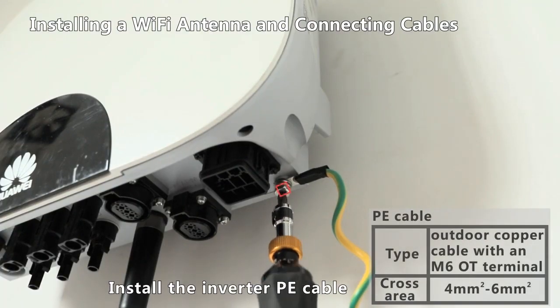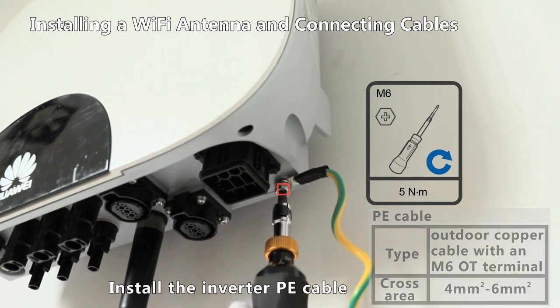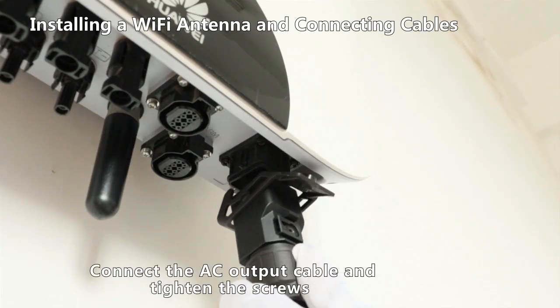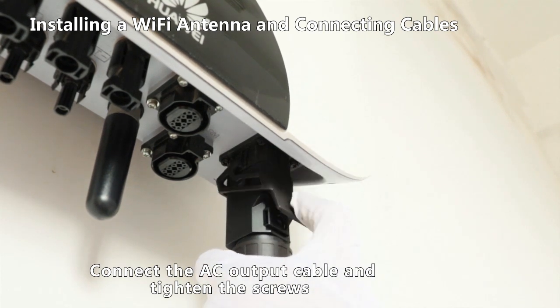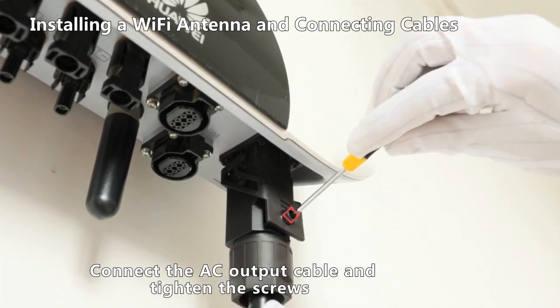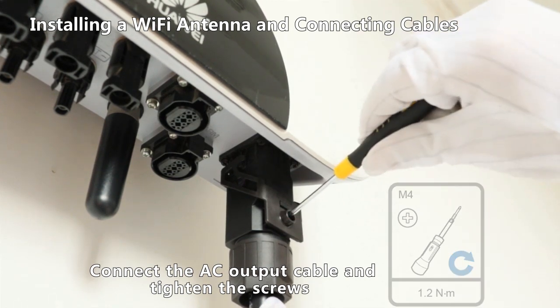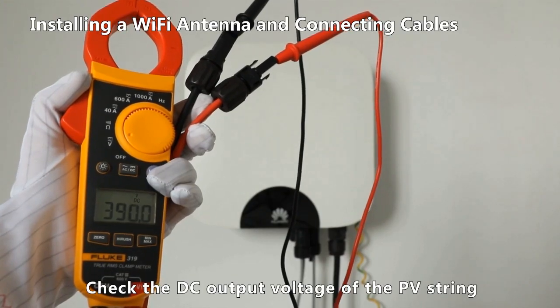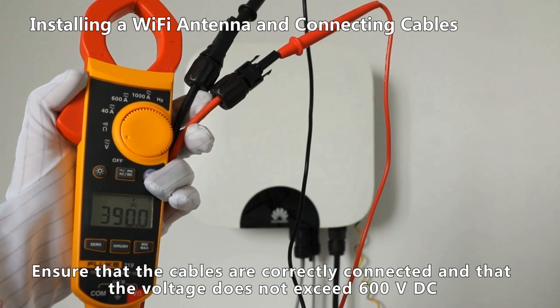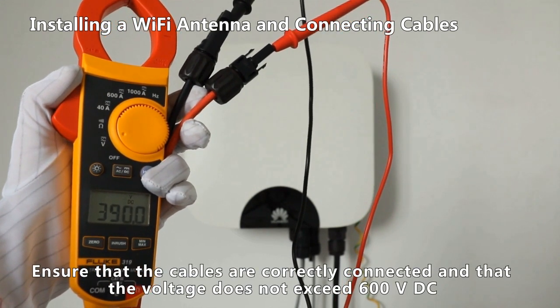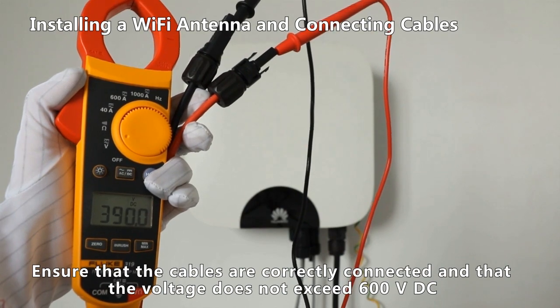Install the inverter PE cable. Connect the AC output cable and tighten the screws. Check the DC output voltage of the PV string. Ensure that the cables are correctly connected and that the voltage does not exceed 600 volt DC.